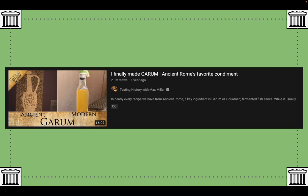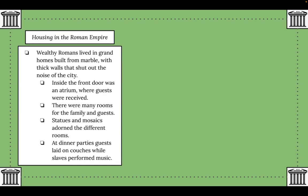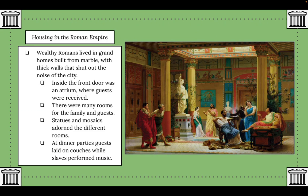Wealthy Romans lived in grand homes built from marble with thick walls that shut out the noise of the city. Inside the front door was the atrium where guests were received — you can see a pool here which provided cooling, and an opening in the ceiling that brought in natural light. There were many rooms for family and guests around it, and statues and mosaics — art comprised of many tiles — adorned the different rooms and floors.